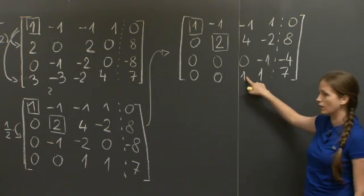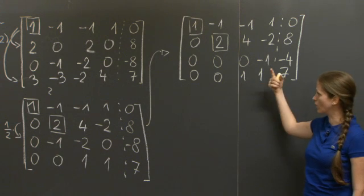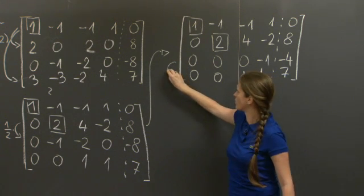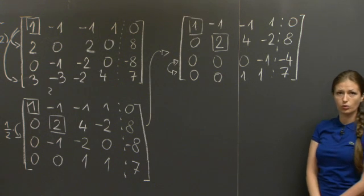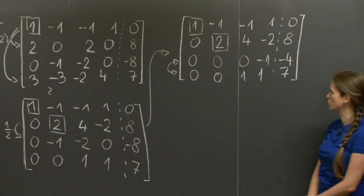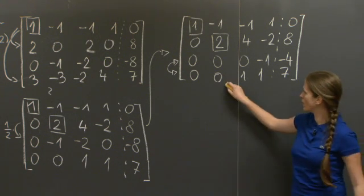But is there another way to get a 0 here? There is a very simple row operation, which consists just of switching the third and the fourth row. It certainly doesn't change the solution of the system. So let's do that.